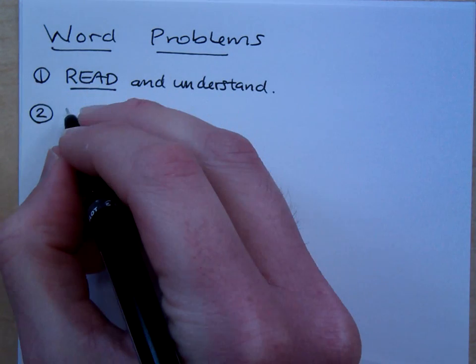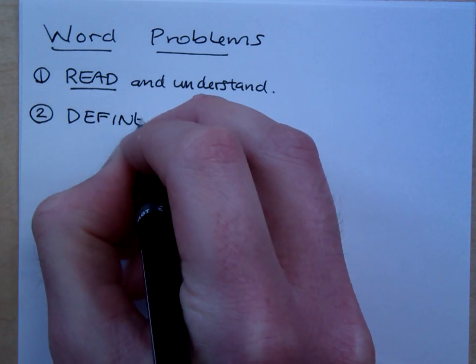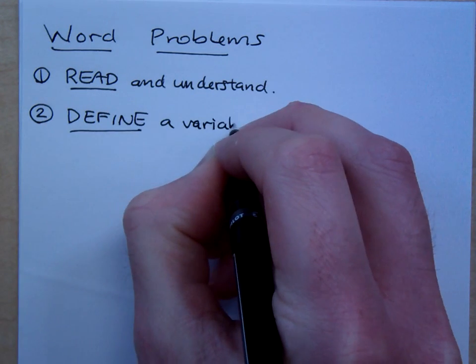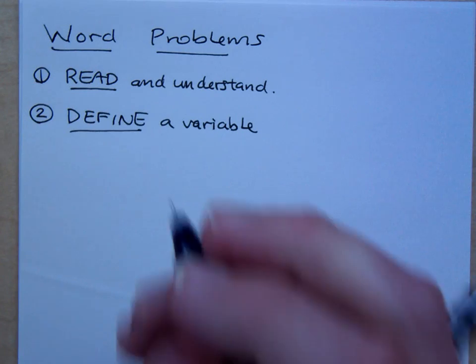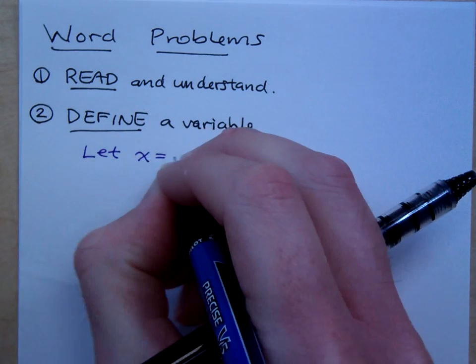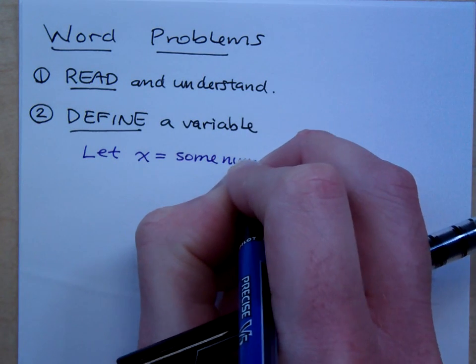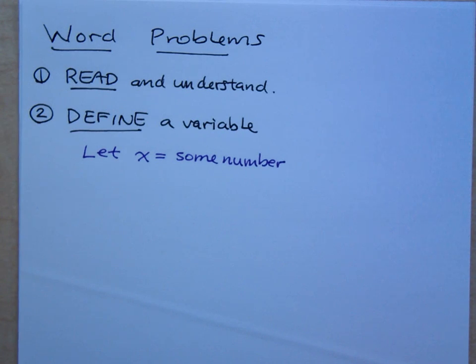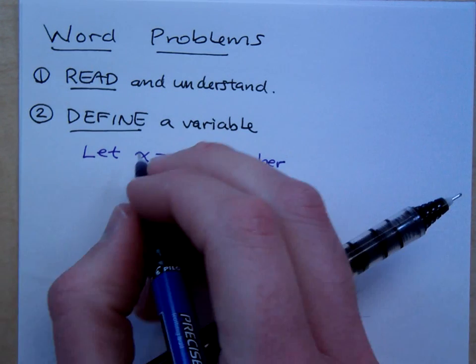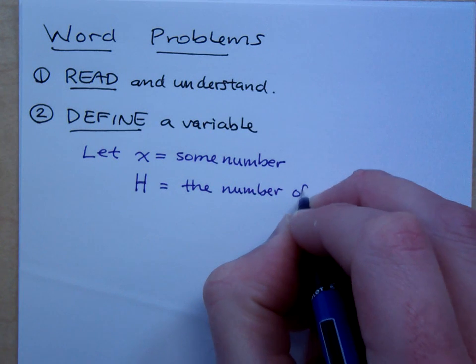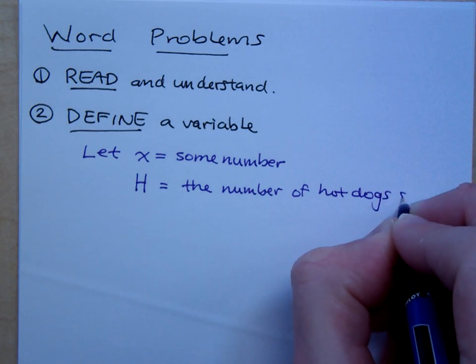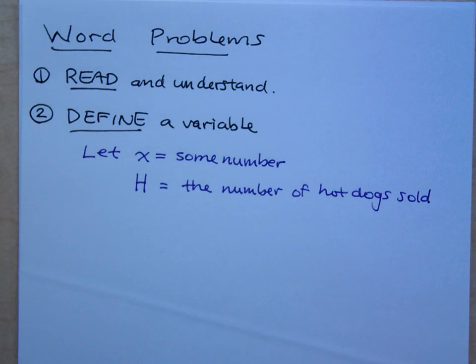Once you know what you're looking for, then you will define a variable. And when we talk about defining a variable, you will be precise in how you define this. You'll say something like this. Let x equal some number. This lets your audience know that the x they see in your equation is just representing the missing number. Or maybe you have this. I want h to equal, say, the number of hot dogs sold. Be precise. Don't let h be hot dogs. It's probably going to be something like the number of hot dogs or the cost of a hot dog. Whatever it is, you need to make sure that you state that clearly for everyone.